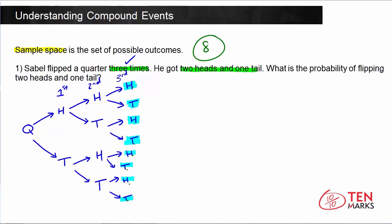Now the next thing we need to do is look at the information. It says he got two heads and one tail — that's H, H, T. There are different combinations this can happen, but we're not concerned about the combination; we're just concerned about the fact that two heads and one tail have to be there. Going through the probability tree — if we toss first and get heads, then toss again and get heads, then get tails, that's one way of doing it.